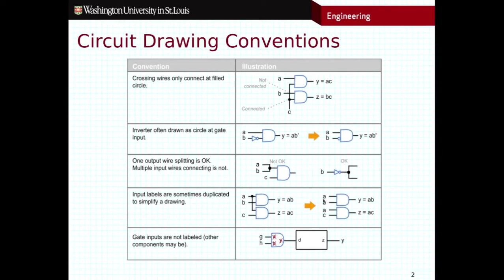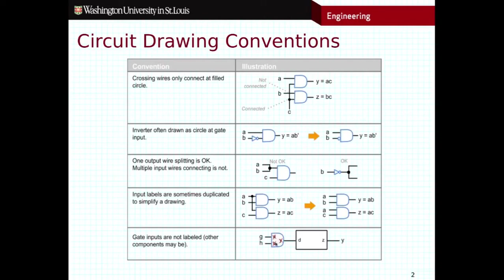If it makes sense to duplicate your input labels — if you have an input going into multiple gates and it's cleaner to have two labels for the same input — that's actually a good thing. Don't feel like you can only have an input at one particular point in your circuit. Creating the same input label in multiple locations will often make things cleaner. One thing students do quite often that is not necessary and makes things confusing is labeling the inputs and outputs of individual gates — you should typically not do that.